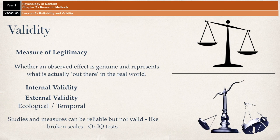As a final point, studies and measures can be reliable but not valid. If you take a set of broken kitchen scales, they will reliably give you the same measure over and over again — however, it's going to be wrong, so it's going to be invalid. Similarly with IQ tests: if someone knows how an IQ test works, are you measuring their IQ, or just measuring how familiar they are with the test? Again, internal validity: am I measuring what I say I'm measuring?